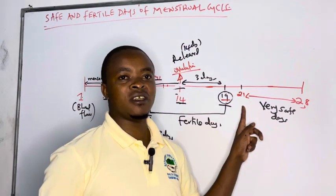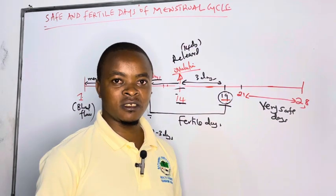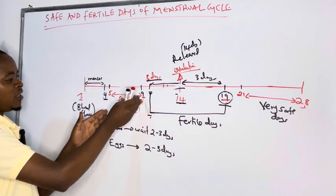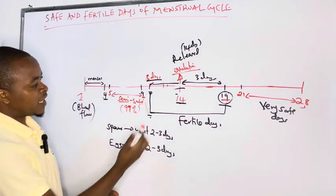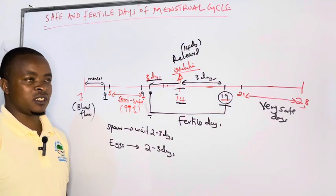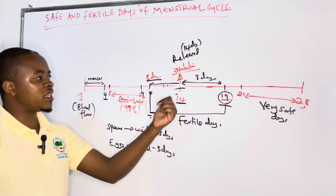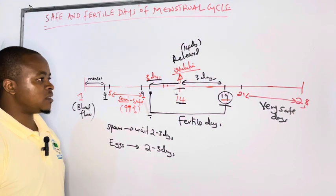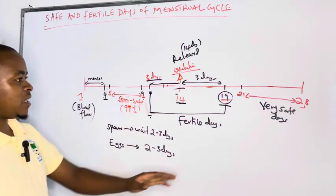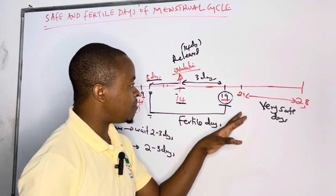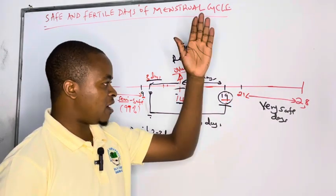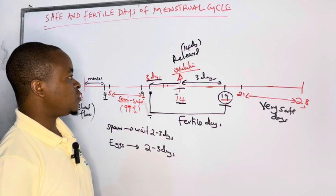Here, 100%, you are guaranteed that you will not get pregnant. But between day 5 and day 9, here you are at risk. You might be at risk in the case of early ovulation. Sometimes the egg can be released on day 13 or day 12. You might get pregnant. That is why we are saying they are semi-safe. But these ones are very safe because we are sure by day 20, the egg is no longer present. You can have your sexual intercourse anytime you want.